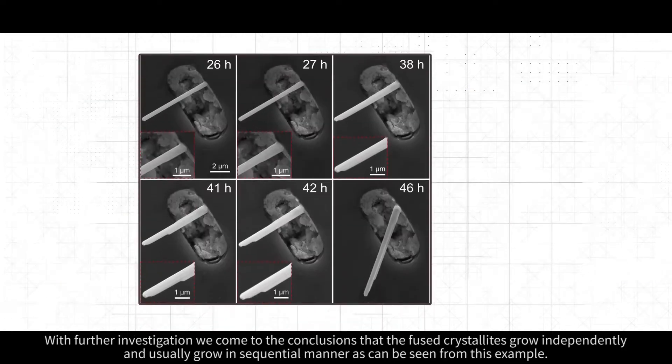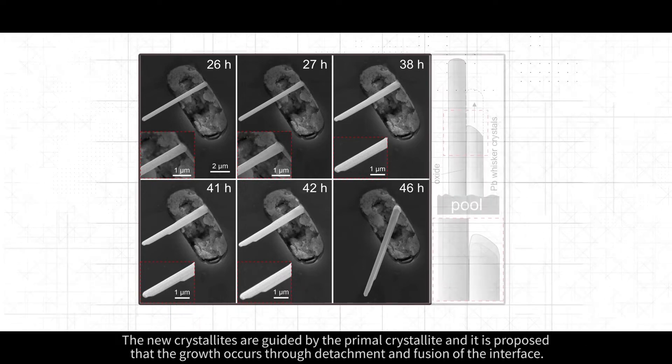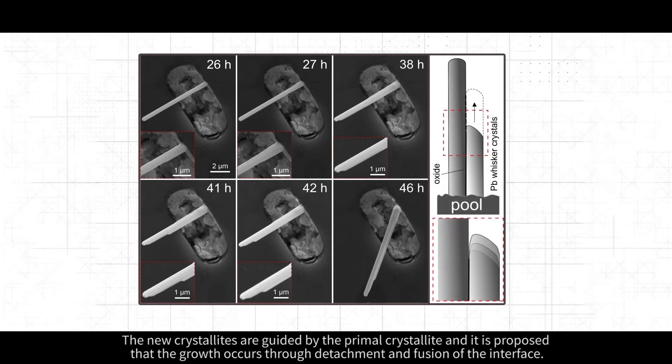With further investigation, we come to the conclusions that the fused crystallites grow independently and usually grow in sequential manner as can be seen from this example. The new crystallites are guided by the primal crystallite and it is proposed that the growth occurs through detachment and fusion of the interface.